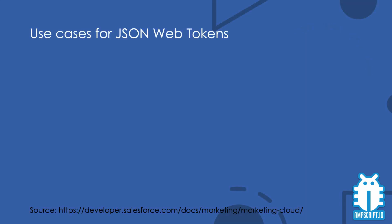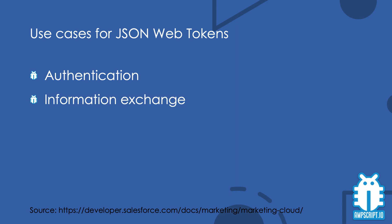In Marketing Cloud, JSON Web Tokens can be used to validate the identity of API calls to external platforms, as they allow applications to authenticate which Marketing Cloud account end-user is calling the API, and they can be used to securely exchange sensitive data between Marketing Cloud and external platforms.